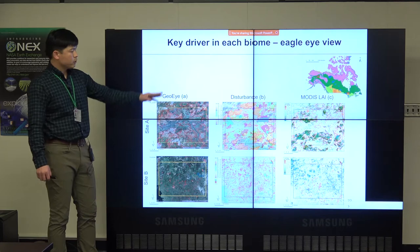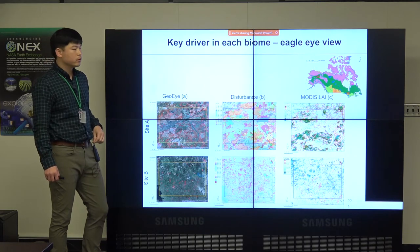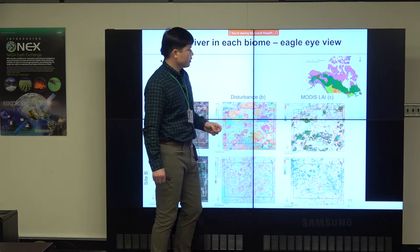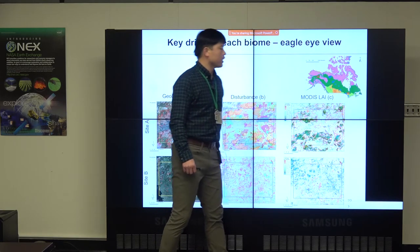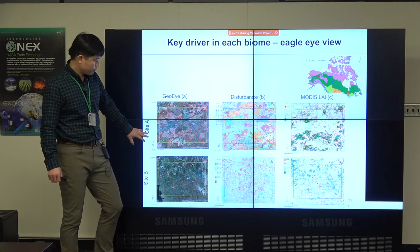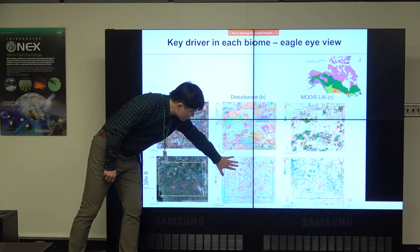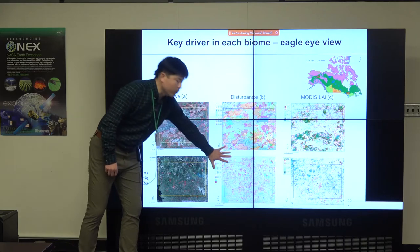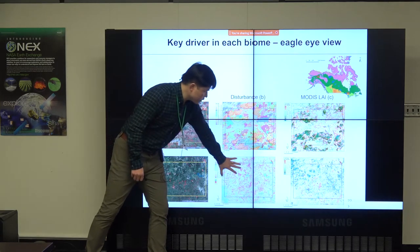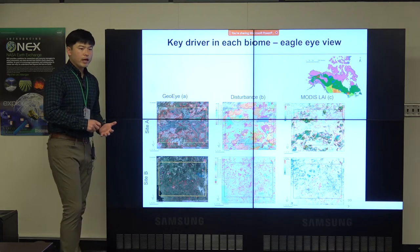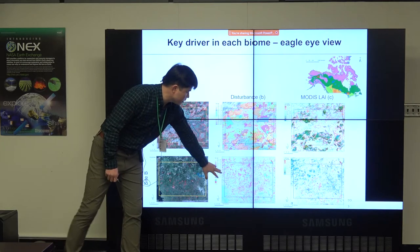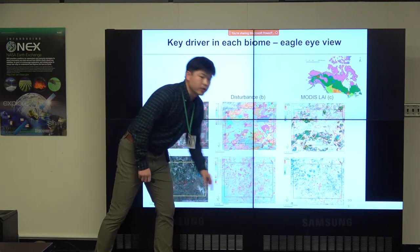Site B is at the edge of the boreal and temperate transition near the Canadian–U.S. border, where harvesting practice is prominent. The purple dotted color shows all harvested practice areas — they are really small patches. But MODIS data really well captured these small patch changes and the LAI trend from these harvested areas.